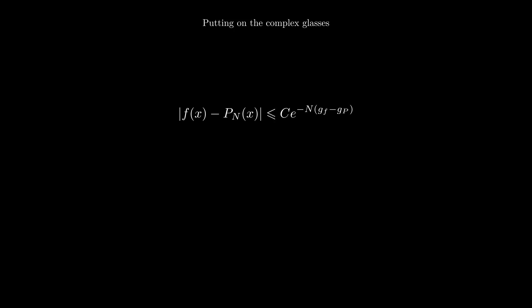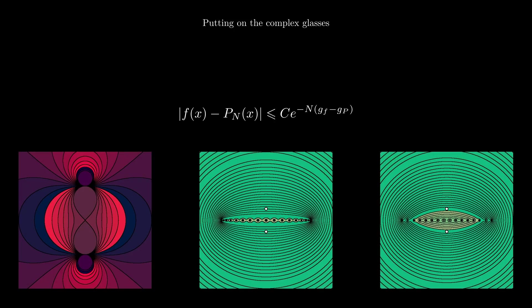We see that for the Chebyshev nodes, the poles of the Runge function sit in a region outside an equipotential containing the nodes, and we have convergence. While for equally spaced nodes, there is no equipotential contour containing all the nodes where the Runge function is analytic, and we have divergence.